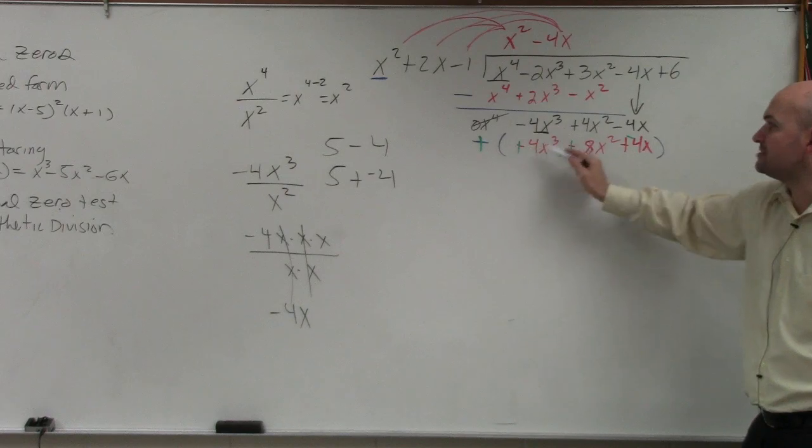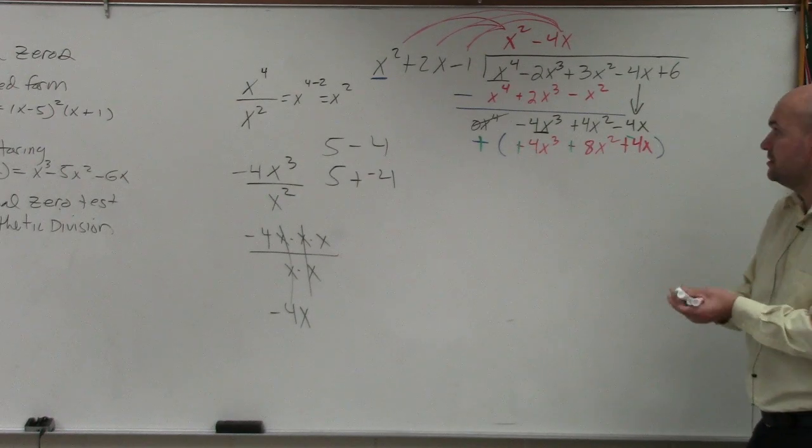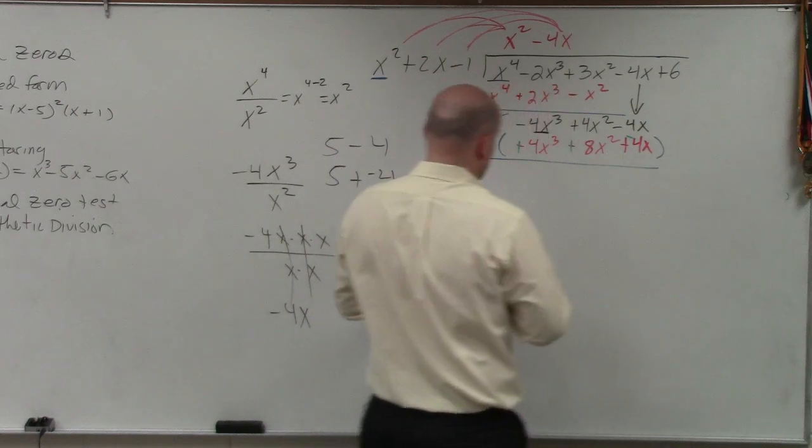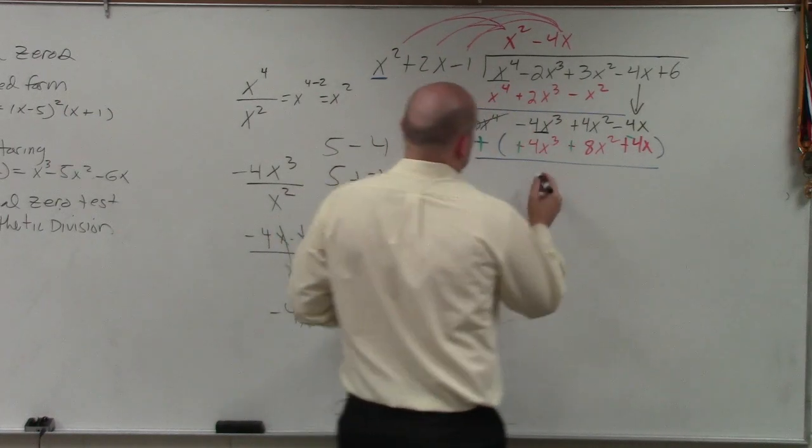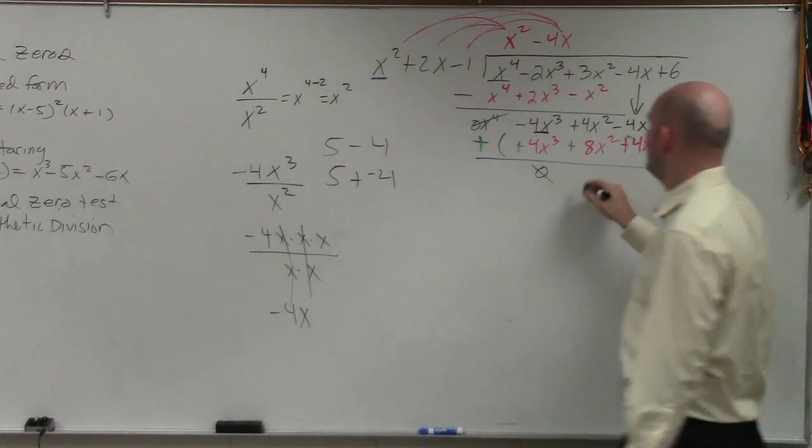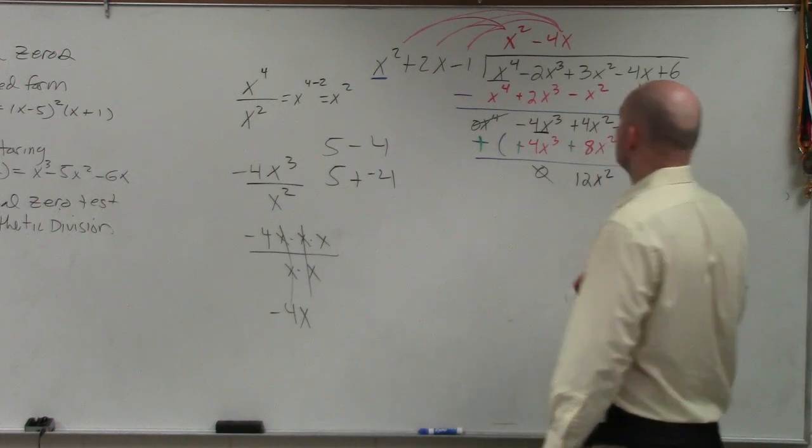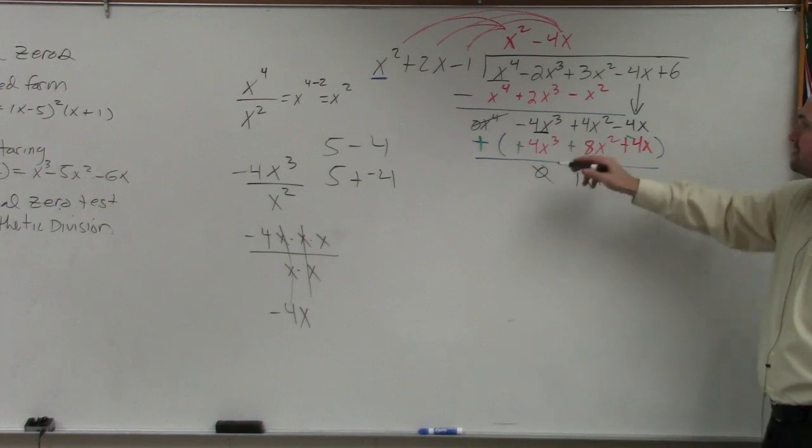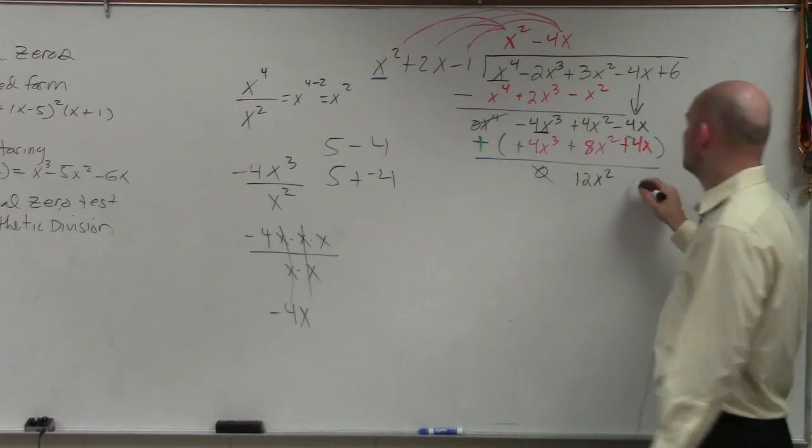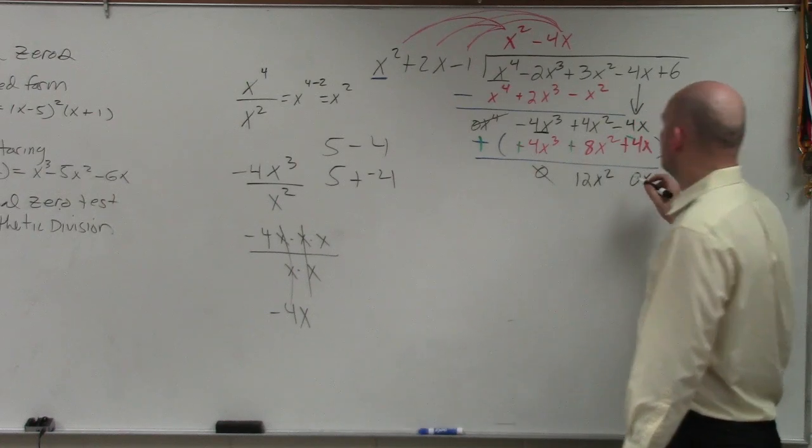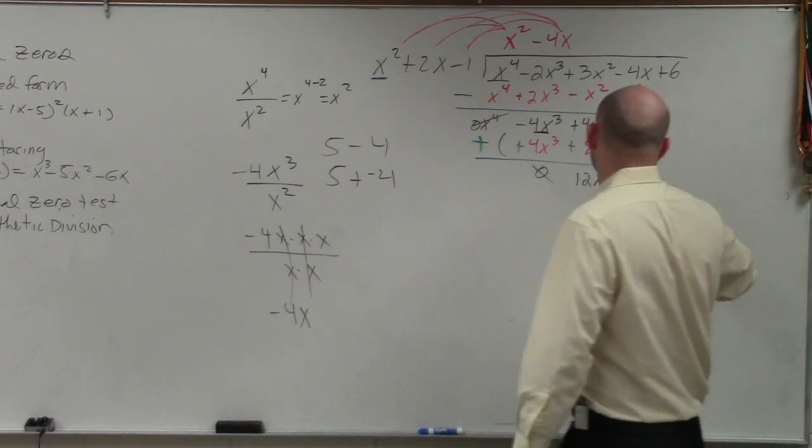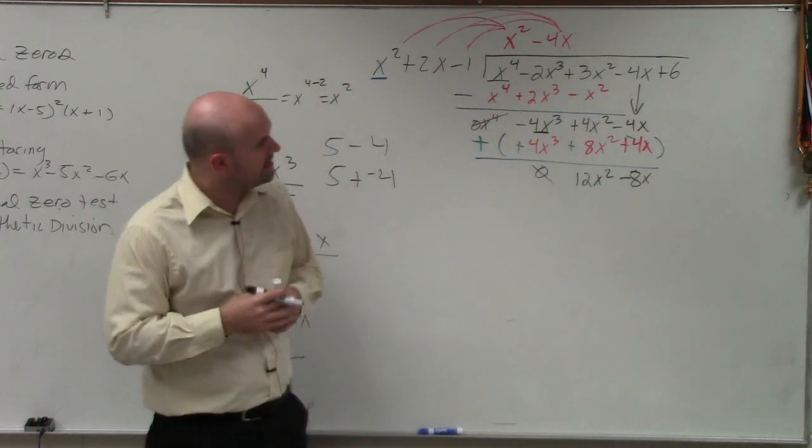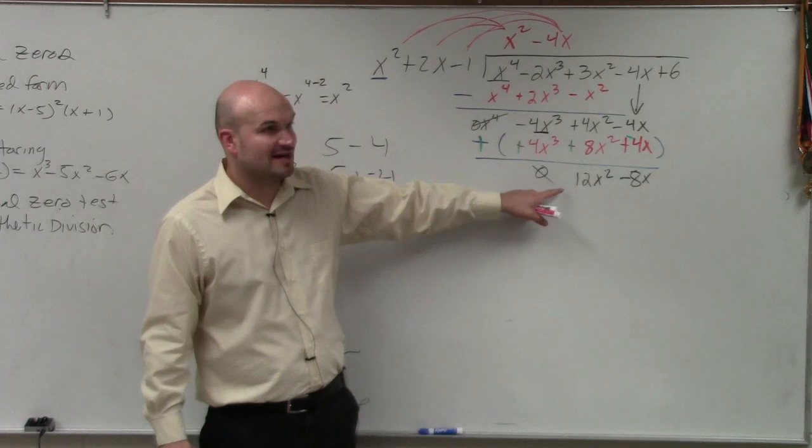Negative 4x cubed plus 4x cubed is 0. And then I have 4x squared plus 8x squared is 12x squared. Then I have negative 4x plus positive 4x is? Oh, it is negative 8x. Thank you. I know. I didn't even notice my own negative. Should have written that in better. So it's a negative x.